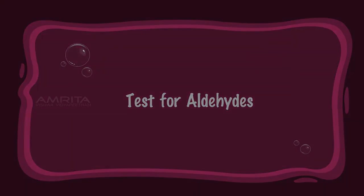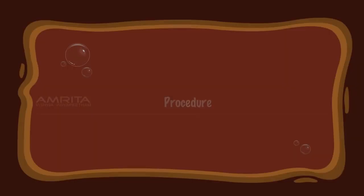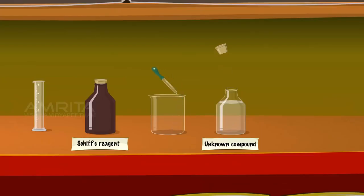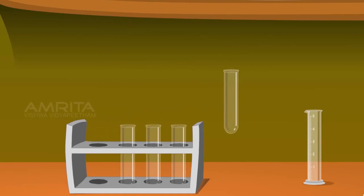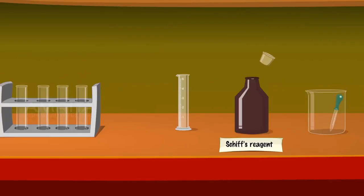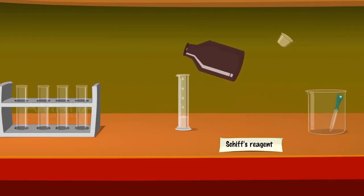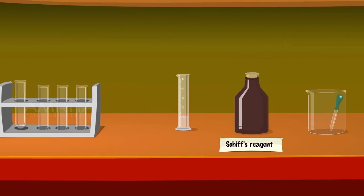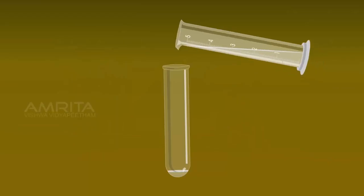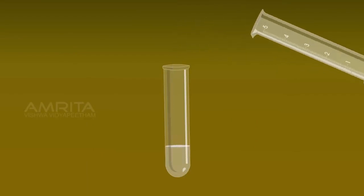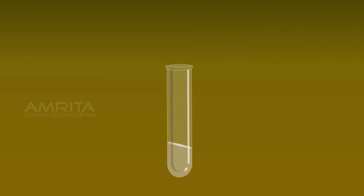Tests for aldehydes — Schiff's test. Procedure: Take a few drops of the given unknown solution using a dropper and pour into a test tube. Take 1 ml of Schiff's reagent in a measuring jar. Pour Schiff's reagent into the compound and shake it. The appearance of pink colour confirms the presence of an aldehyde group.